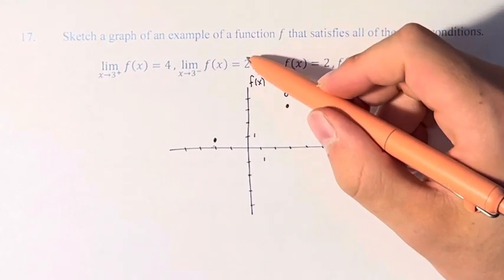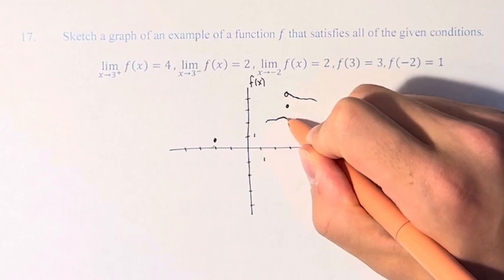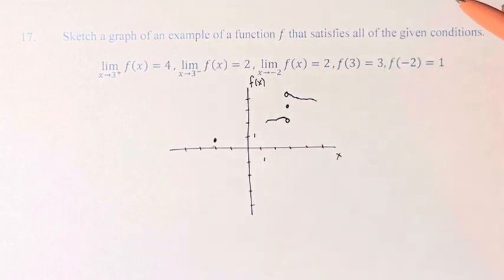From the left, the value of the function approaches 2, so a similar situation, and then we have an open circle because it's not actually equal to it.